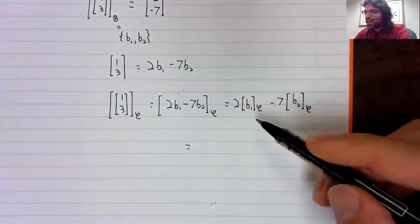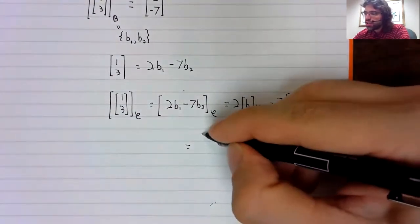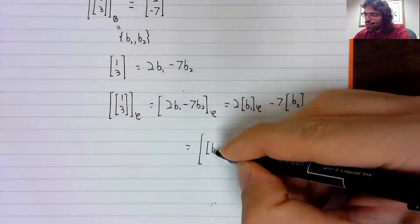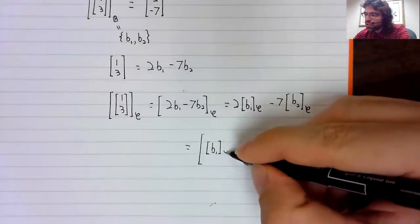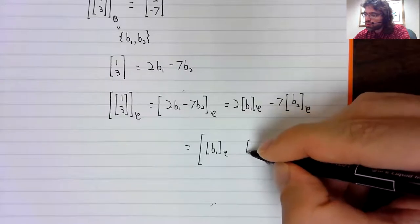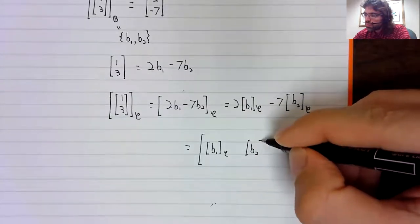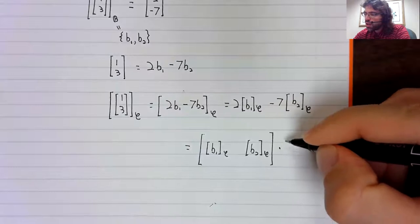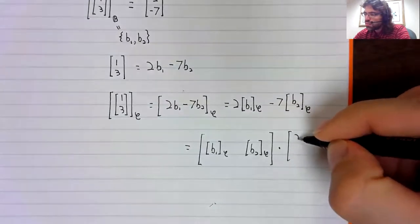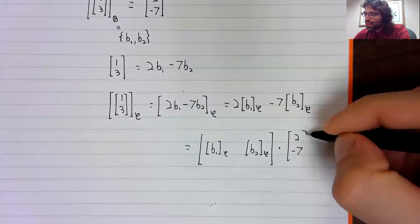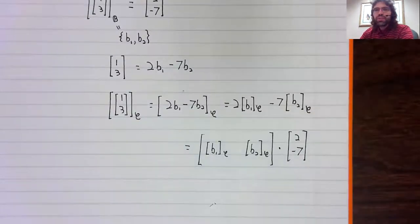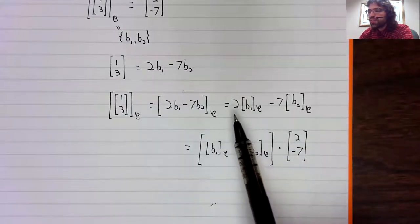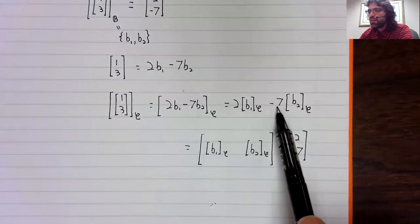And now, this is a linear combination of vectors. So, a linear combination of vectors is a matrix times a vector. In particular, it's the matrix with these vectors as columns, times the vector of coefficients.